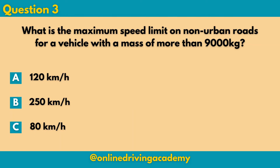Question 3: What is the maximum speed limit on non-urban roads for a vehicle with a mass of more than 9,000 kilograms? Is it A. 120 km an hour, B. 250 km an hour, or C. 80 km an hour? The correct answer here will be C.